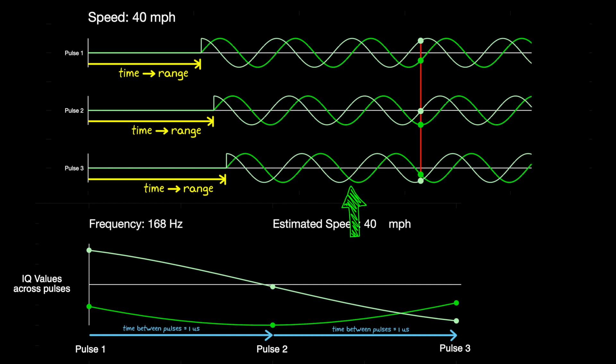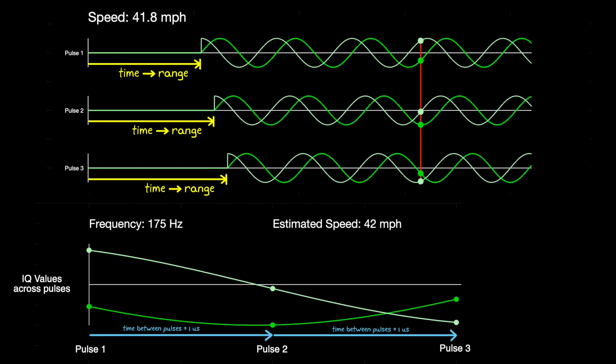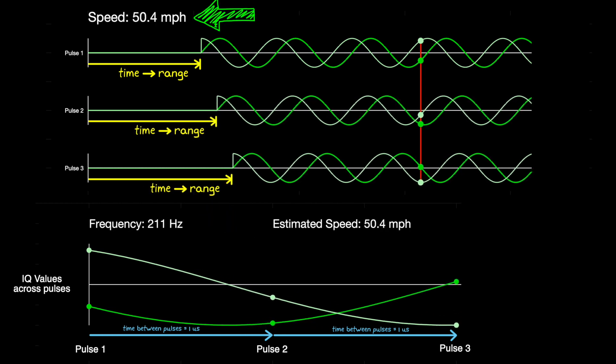And so when we sample each delayed pulse at the same relative time, we're essentially just sampling the transmitted pulse at a fixed interval. And that aliases the high frequency transmit signal down into a lower frequency. This lower frequency is exactly the Doppler shift created by the velocity of the object.